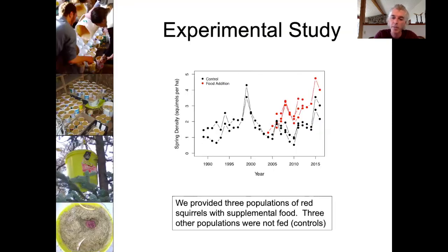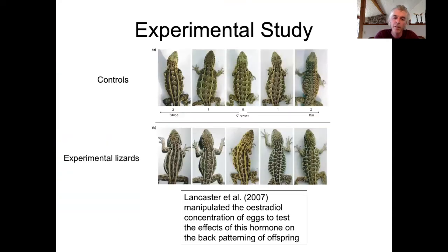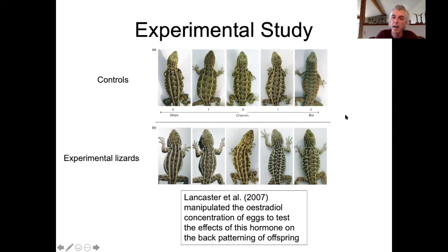In a study that we performed with red squirrels, some populations of red squirrels were supplemented with additional food, shown in red, while other populations, shown in black, were not fed and as a result remained as controls. Finally, Lancaster et al. manipulated the levels of estradiol in eggs of side-blotched lizards to test the effects of this hormone on the back patterning of the offspring that developed from these eggs. So in this case, we have some individuals that received no manipulation and others for which estradiol concentration was experimentally manipulated in their eggs to see how that affected their back patterning.